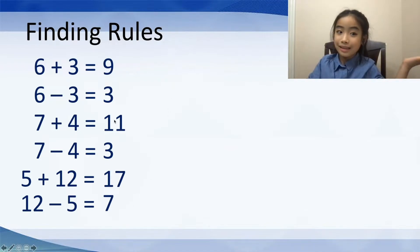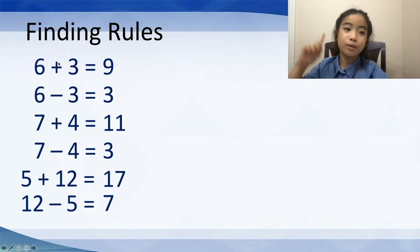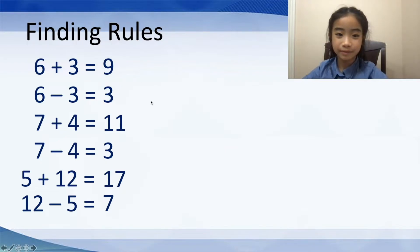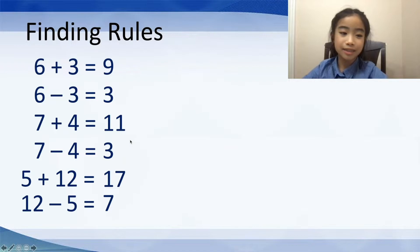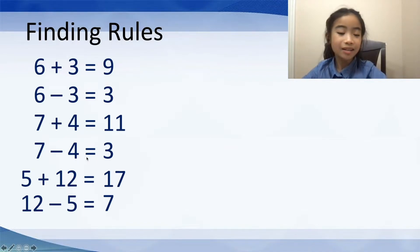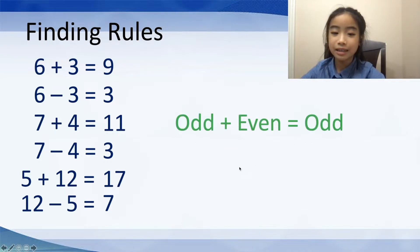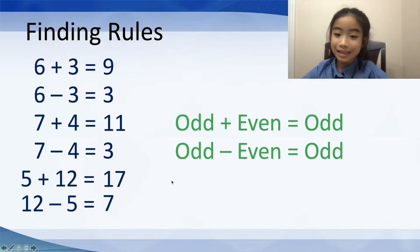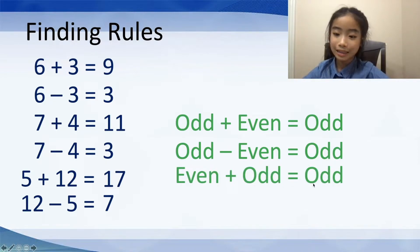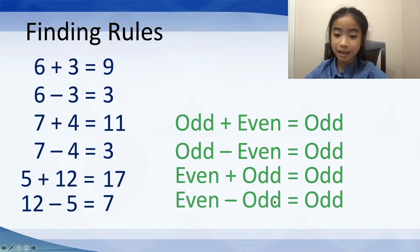So what are the rules here? To the left side of the equation, we have one even number and one odd number, and the result is an odd number. For example, 7 minus 4 equals 3: 7 is an odd number and 4 is an even number, and the result is 3, which is an odd number. So it's odd plus even equals odd, and odd minus even equals odd. It can work both ways, so we also have even plus odd equals odd, and even minus odd equals odd.